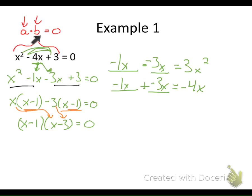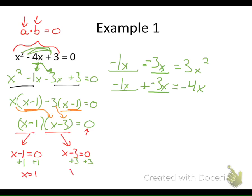I factor the common factor x minus one out to the front, leaving me with x minus one times x minus three equals zero. We've taken this trinomial and rewritten it as something times something. Using the zero product property, I set each factor equal to zero. Adding one to each side gives x equals one, and adding three to each side gives x equals three. So the solution set is {1, 3} — two values that make the original equation equal zero.